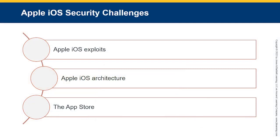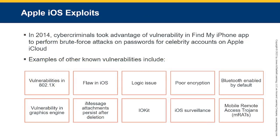The challenges in Apple iOS include iOS exploits, iOS architecture, and the App Store. In 2014, cybercriminals took advantage of a vulnerability in the Find My Phone app to perform brute force attacks on passwords for celebrity accounts on Apple iCloud. Other notable vulnerabilities include a vulnerability in 802.1x protocol in iOS, a logic issue for encryption, Bluetooth enabled by default, a vulnerability in the graphics engine, iMessage attachments persisting after deletion, IOKit, and iOS surveillance via mobile remote access tools. Mobile RATs focus on jailbreaking devices — when you jailbreak a device, you remove all the security mechanisms.